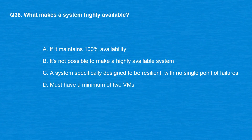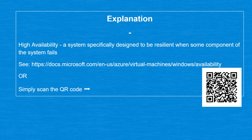Question 38: What makes a system highly available? Option A: It maintains 100% availability. Option B: It's not possible to make a highly available system. Option C: A system specifically designed to be resilient with no single point of failures. Option D: Must have a minimum of two VMs. The correct answer is Option C — a system specifically designed to be resilient when some component of the system fails.